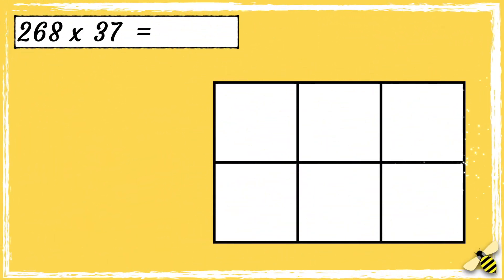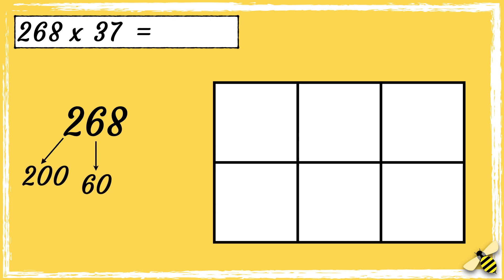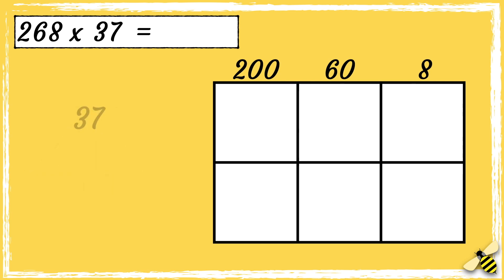Here is a number sentence: 268 multiplied by 37. Our box is going to be different this time, because we have a 3-digit number multiplied by a 2-digit number. First, let's partition the number 268 — we have 200, 60, and 8 — so I'm going to put those numbers along the top of the box. Now let's partition the number 37 — we have 30 and 7 — so we're going to put those numbers along the side of the box.